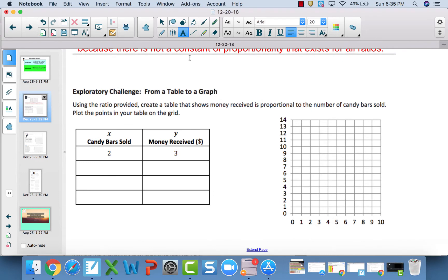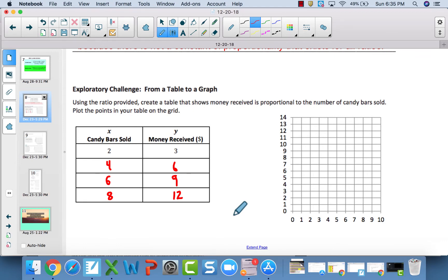This exploratory challenge asks us to take this ratio and make it proportional. Starting with 2 to 3, you can multiply by 2 to get 4 to 6, then by 3 to get 6 to 9, then by 4 to get 8 to 12. This table now represents a proportional relationship because all these ratios are equivalent. Proportional relationships just mean equivalent ratios—they're synonyms for each other.